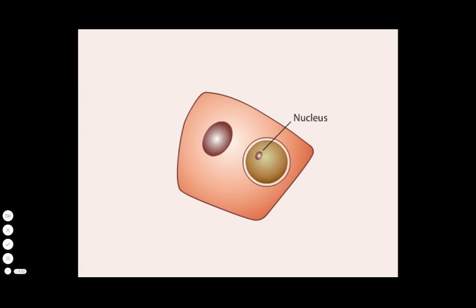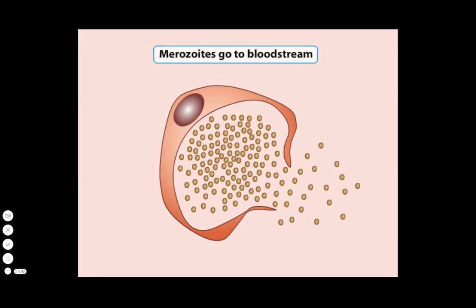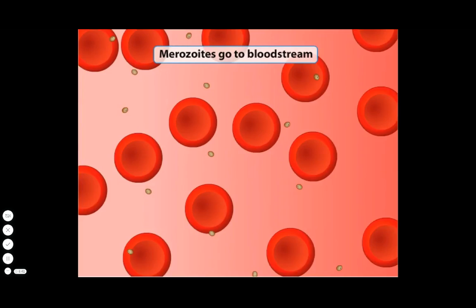the parasite's nucleus divides many times and then the nuclei bud off to produce thousands of new Plasmodium cells, now in a form called merozoites. About a week later, the merozoites burst out of liver cells and enter the bloodstream.